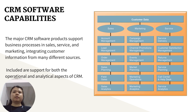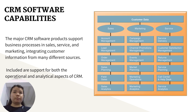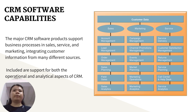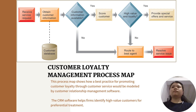CRM software incorporates hundreds of business processes to represent best practices in those areas. The major CRM software products support processes in sales, service, and marketing, which integrate customer information from different sources, including support for both the operational and analytical aspects. This graphic illustrates how best practices for increasing customer loyalty through customer service can be modeled by CRM software.